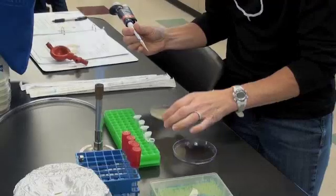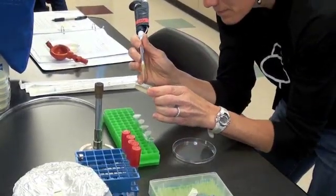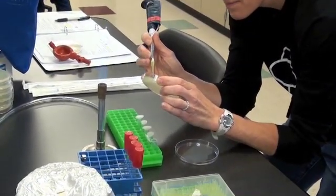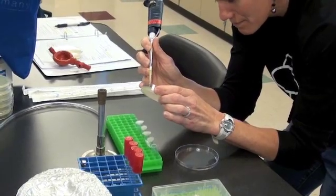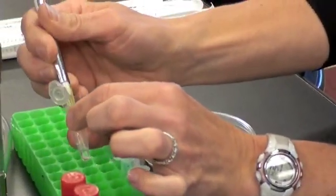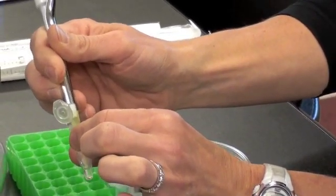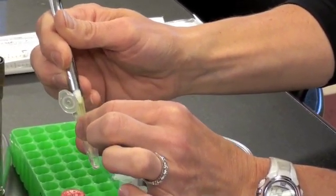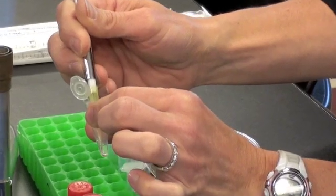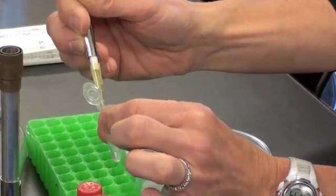The student is going to pick those plaque forming particles from her petri dish using a sterile micropipette tip. She touches the tip to the plaque and then places the tip in her phage buffer. Here she's moving the tip around in 100 microliters of phage buffer hoping that those plaque forming units will be transferred to the buffer.